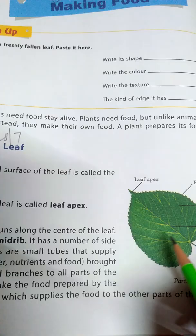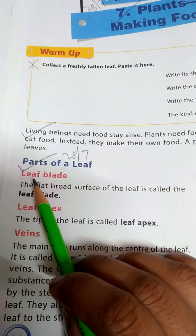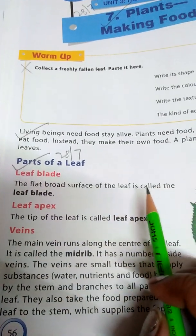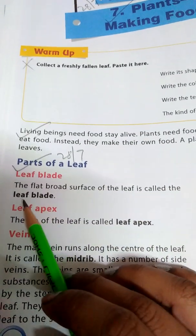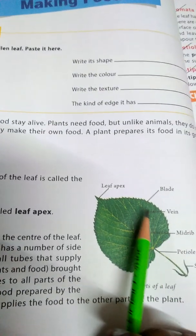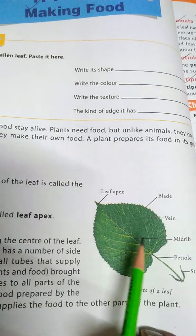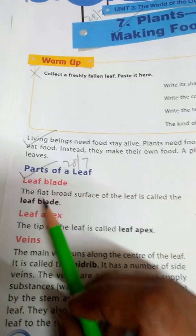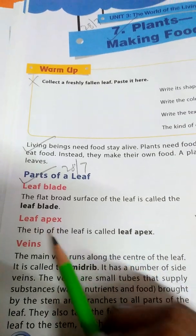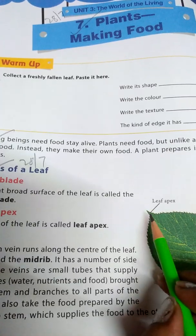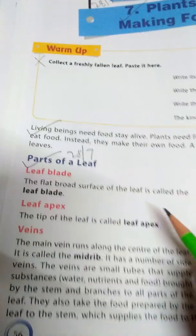The flat part of the leaf is called the leaf blade. The tip of the leaf is called the leaf apex.